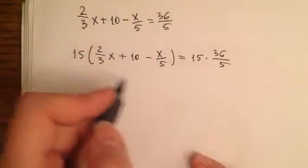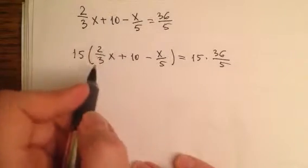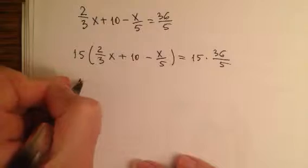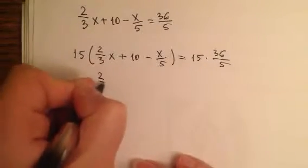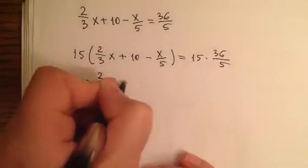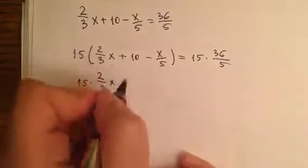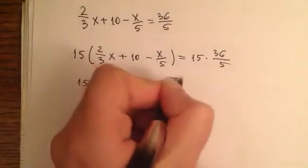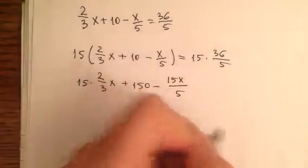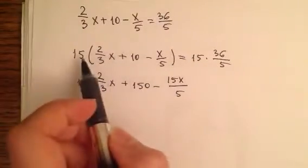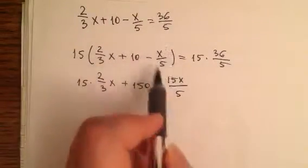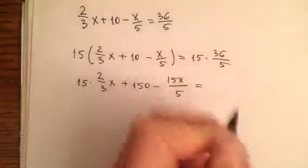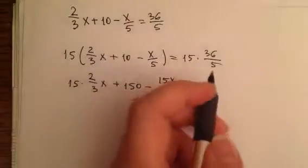Now I need to develop this. When I develop, I multiply every single number by fifteen. Fifteen times two over three x plus ten times fifteen equals one hundred fifty minus fifteen x over five.